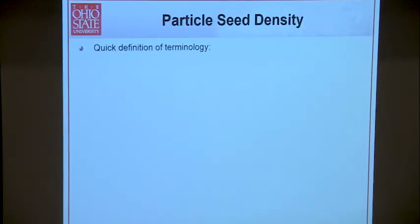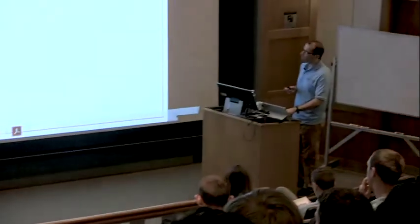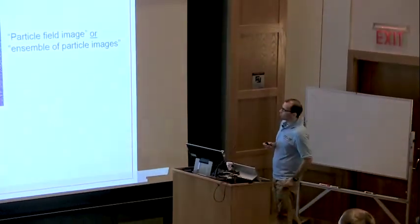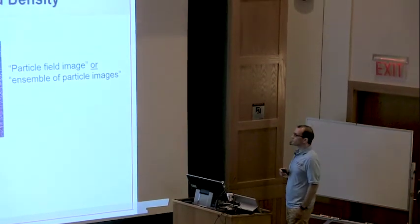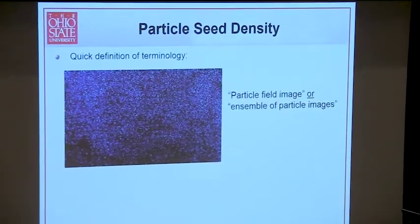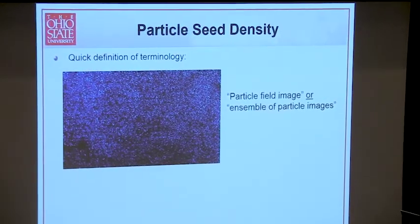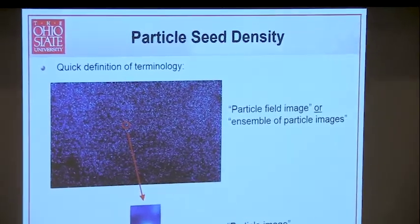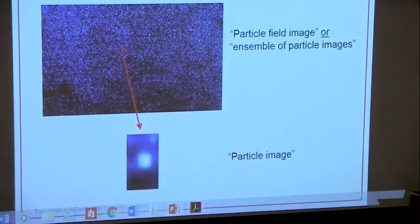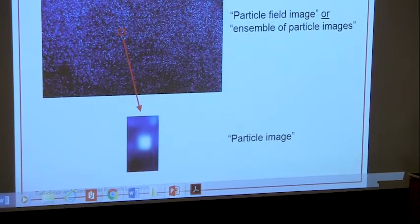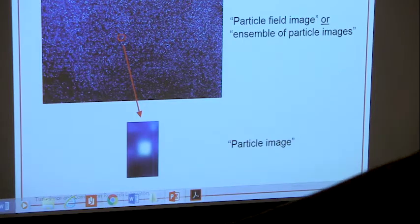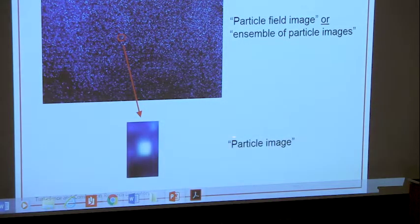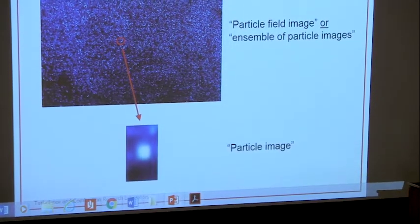Let's get some terminology definitions. If we have a complete image, I'll refer to this as a particle field image or an ensemble of particle images. A particle image is distinct - you have a real particle in the flow field and then you have the transfer of the image of that individual particle onto your camera. So this is a singular particle image.